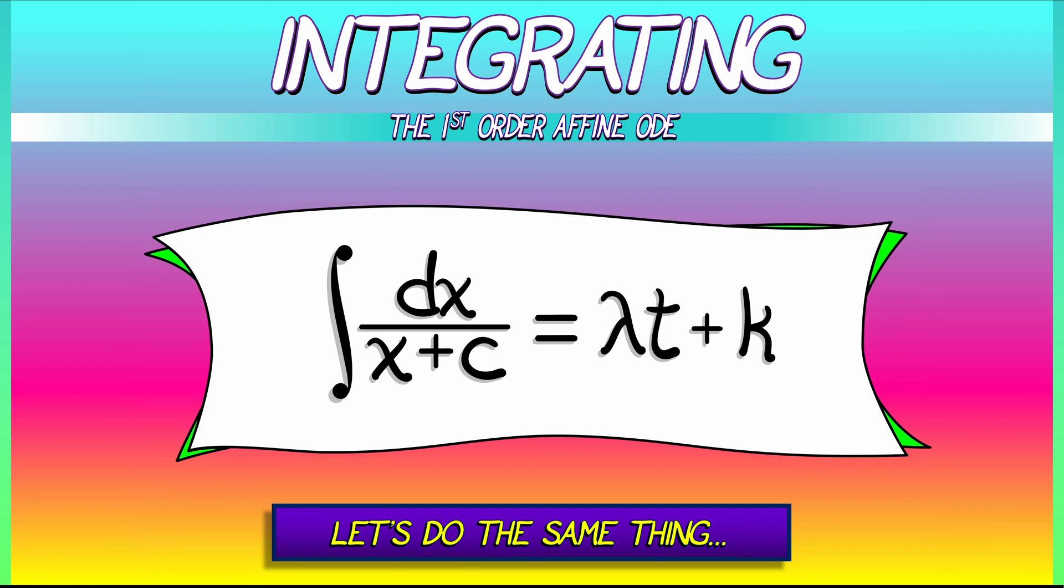On the left, when I integrate dx over x plus c, what do I get? That's just going to be the antiderivative of x plus c. That's going to be log of quantity x plus c. We can check that. If I differentiate log of x plus c, I get 1 over x plus c. Good.